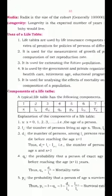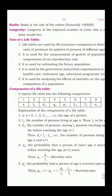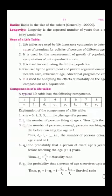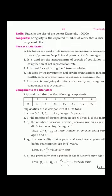The next definition is radix. Radix is the size of the cohort — the number of people in the group, whether 1,000 or 10,000. It is generally taken as 1 lakh. The next definition is longevity, which is the expected number of years that a newborn baby would live. For example, if a baby is born, we say it will live up to 75 or 85 years — that length of period is known as longevity. The definitions of cohort, radix, and longevity are each worth one mark.